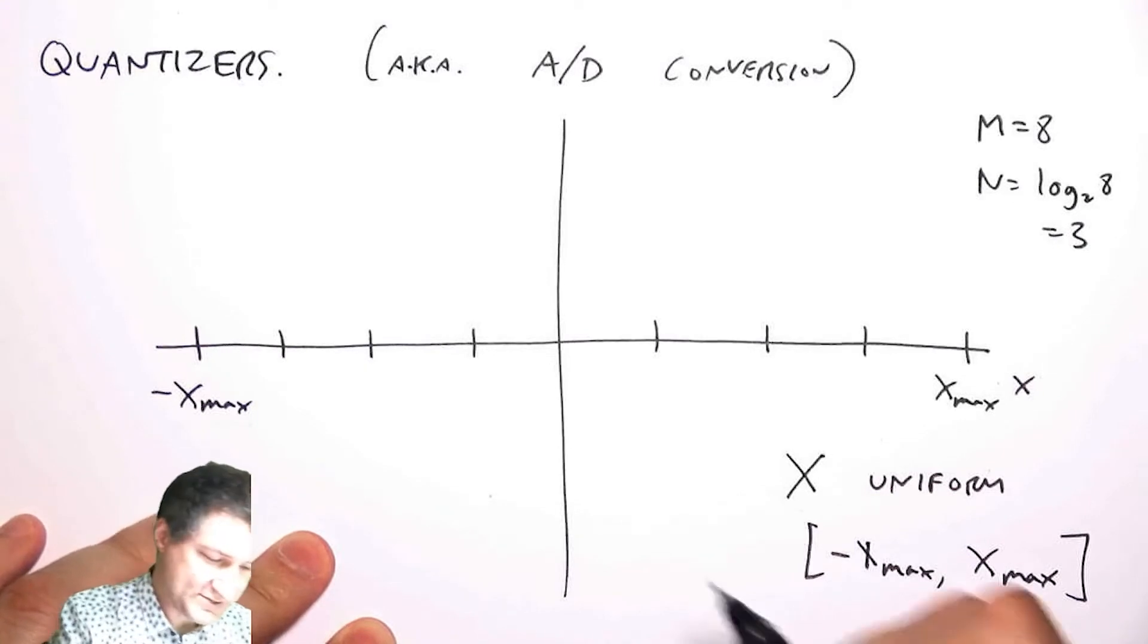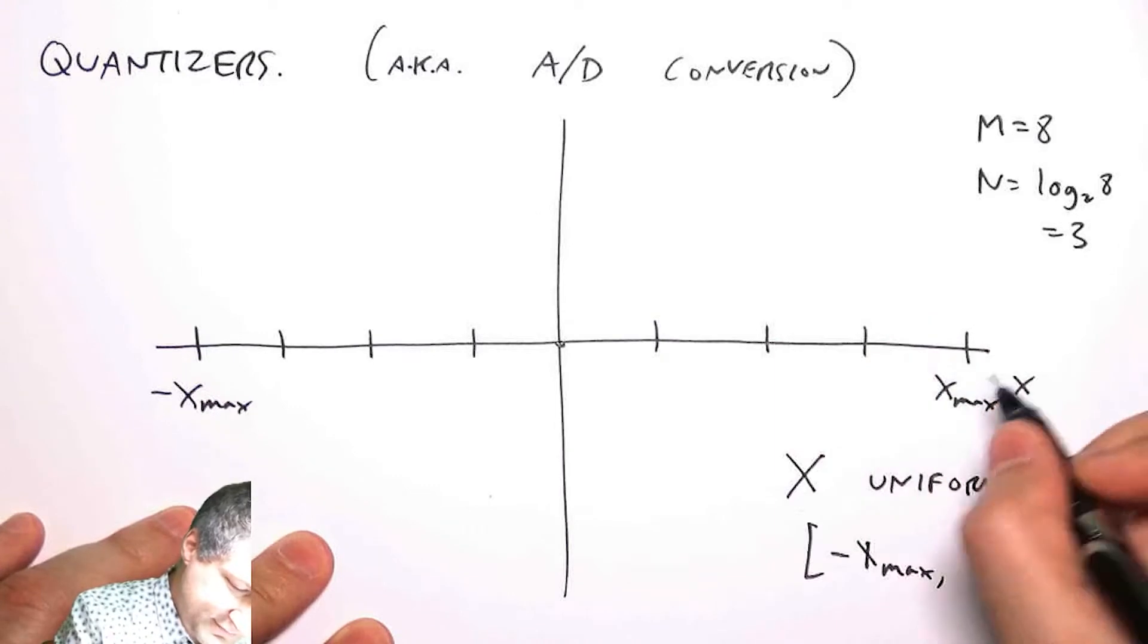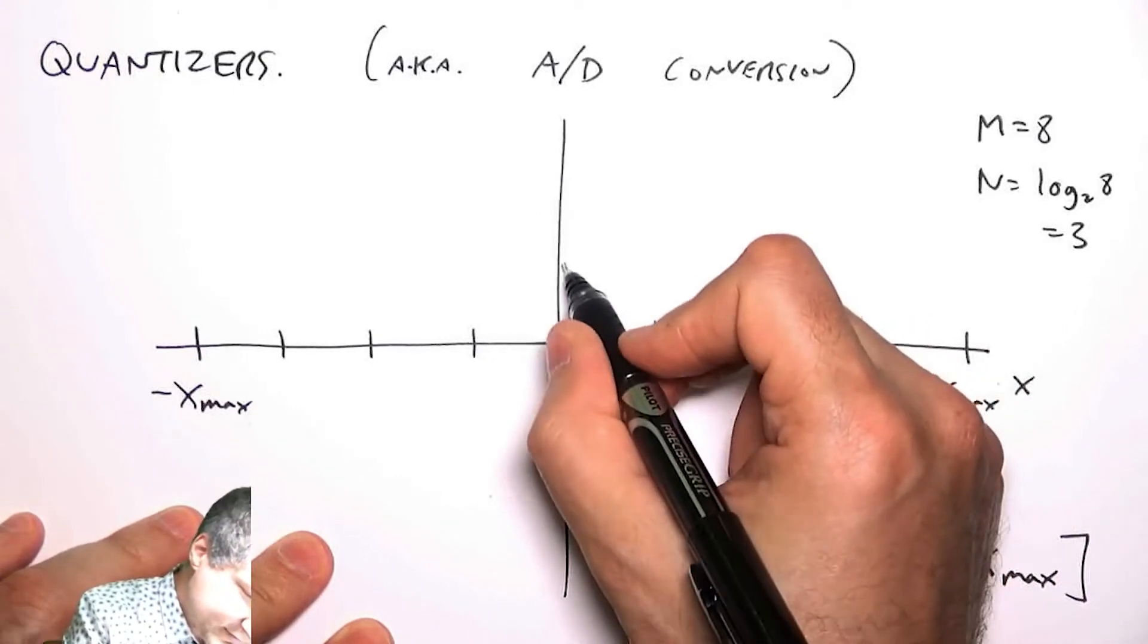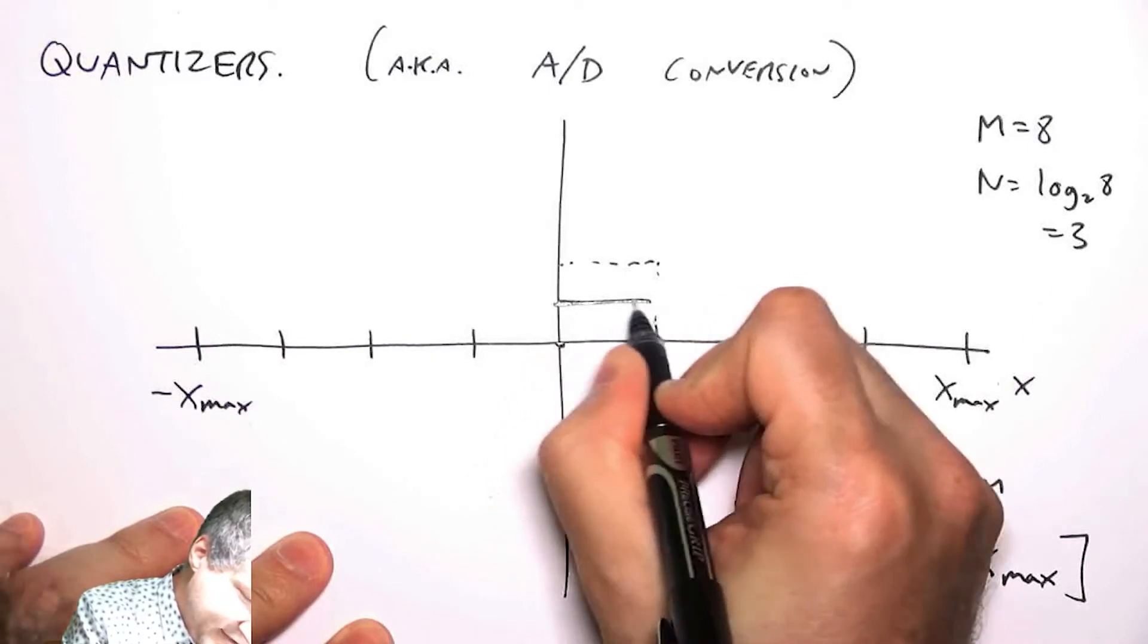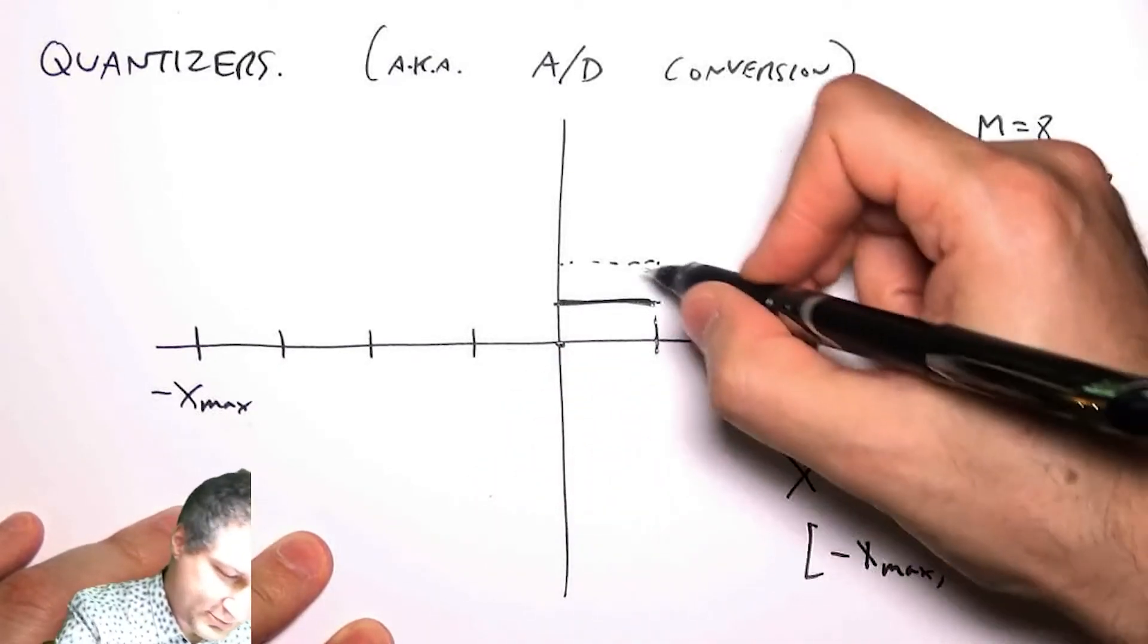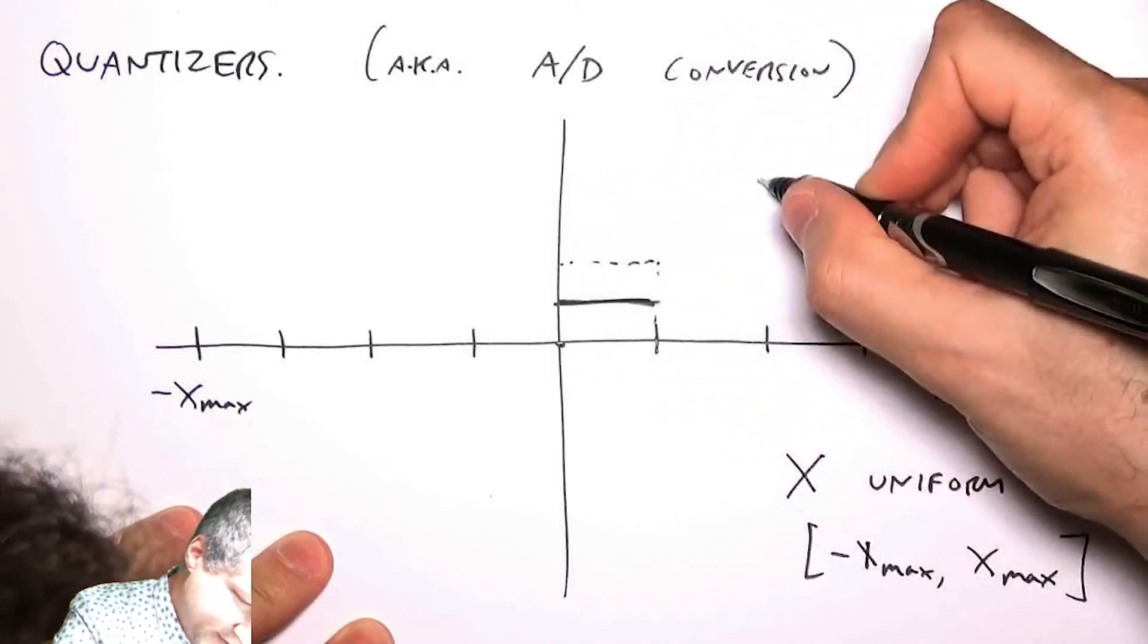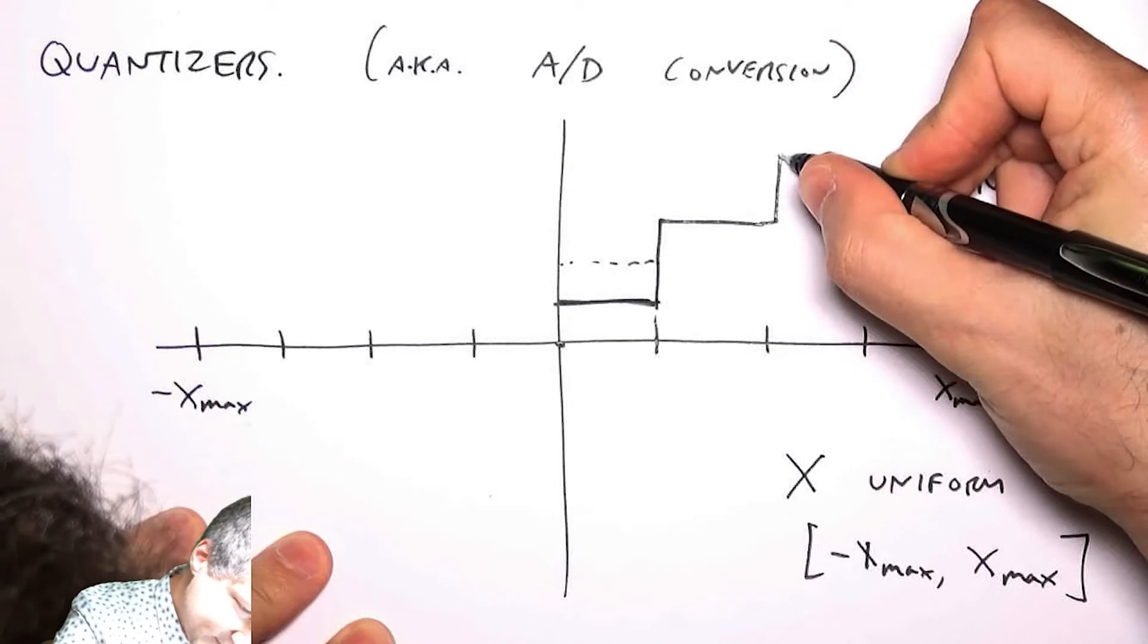What does the quantizer do? Well it says anything that's in this range from here to here is going to get quantized to this middle value. That's like basically the best I could do. And then the next bin over here gets quantized to the middle value and so on. So the quantizer kind of looks like this stair-steppy thing.